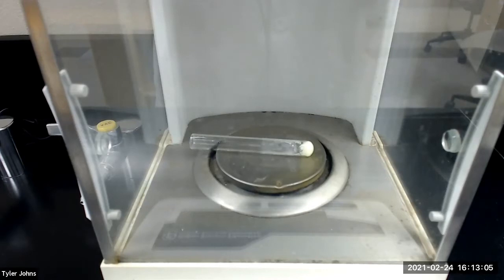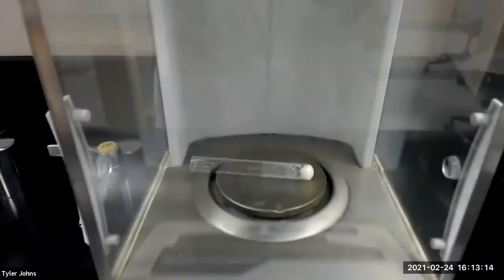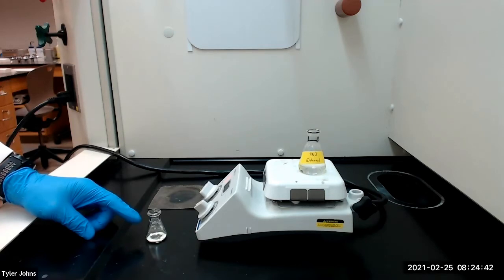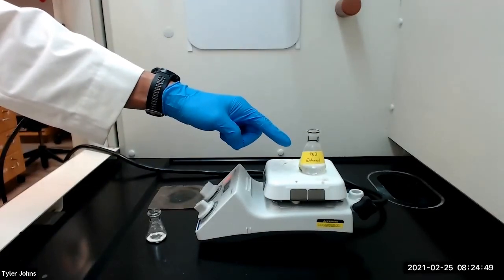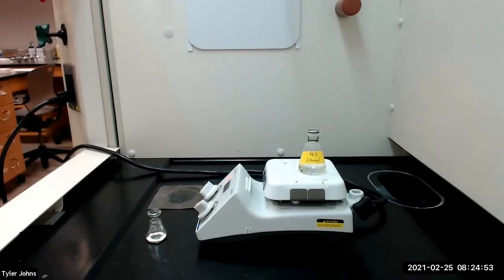The mass of the pre-weighed test tube plus the partially purified product is 8.3274 grams. I've transferred the partially purified product from the test tube to a 10 milliliter Erlenmeyer flask, and we will now perform a recrystallization of the product using a minimum amount of boiling hot 95% ethanol. After the solid has dissolved, we will allow the flask to cool to room temperature and induce crystallization by scratching the inside of the flask.